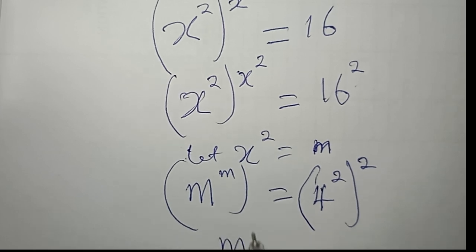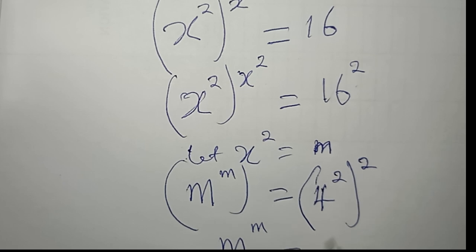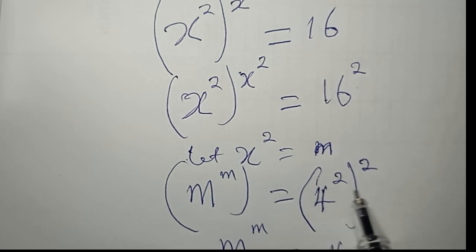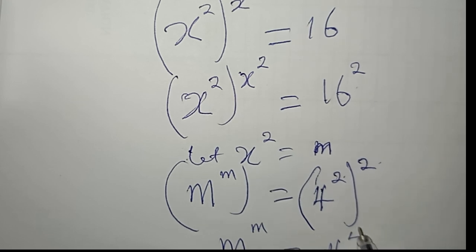So I will have m^m equals... Now I can use this 2 to multiply this 2 right here. So if I do that, I'm going to be having that this equals 4^(2×2), which is 4^4.